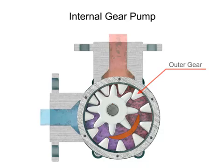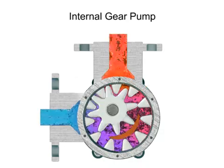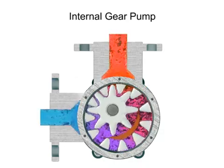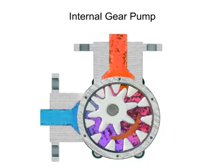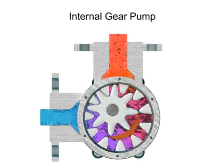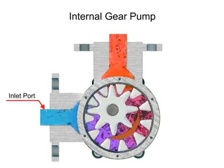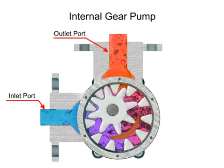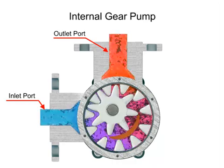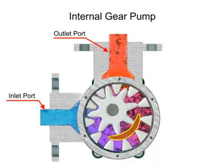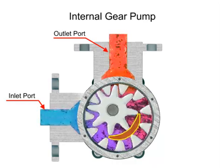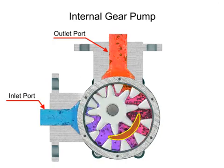As the inner gear rotates, it meshes with and moves the outer gear. Liquid is trapped in the gear spaces and carried from the inlet to the discharge. A stationary crescent-shaped divider separates the intake and discharge portions of the fluid.